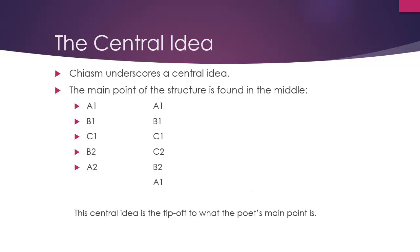The rest of the poem is description helping to show that the central idea is true. Chiasm underscores a central idea — the main point of the structure will always be found in the middle. Sometimes C1 is by itself; it's not unimportant, it means it's the central idea and everything is pointing to it and flowing out of it. The thing in the middle tips you off to what the poet's main point is.